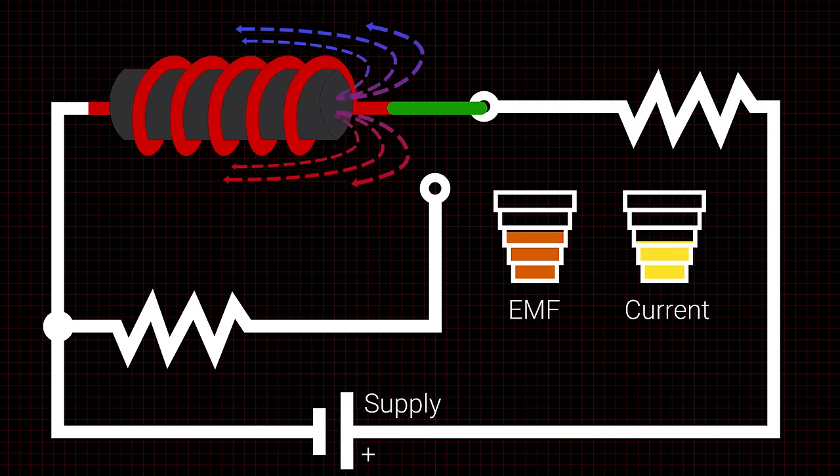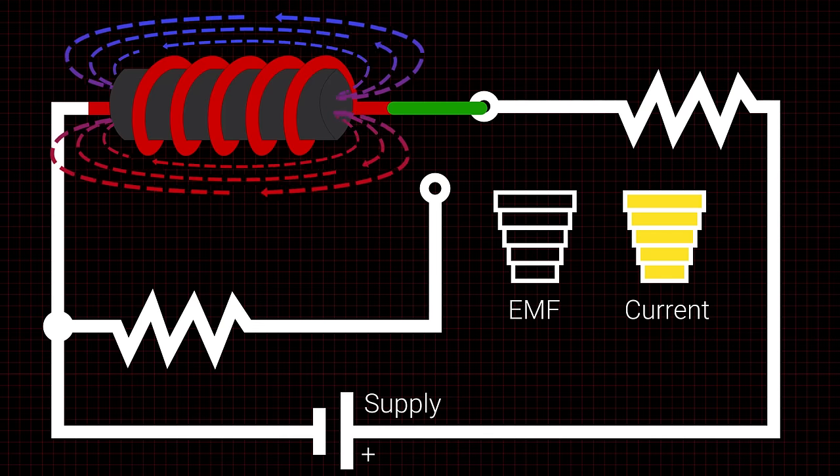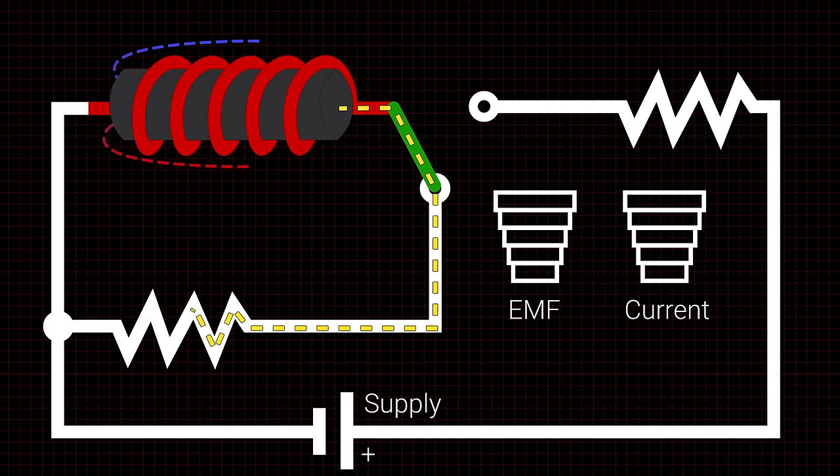Once the circuit is de-energized, the inductor again resists the change in current flow by providing current that was stored within the magnetic field, allowing the circuit to keep going for a short time after the main power source is off.